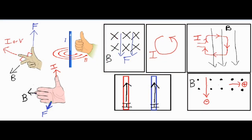In this video we're going to be talking about the three different right-hand rules and when to apply each of them. We have five different fairly unique situations and we'll talk about when you should use each of the different right-hand rules to produce the solution you're looking for, which is either the current, force, or magnetic field.